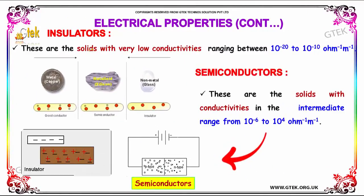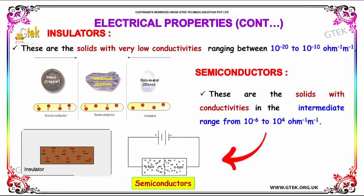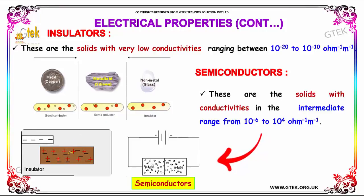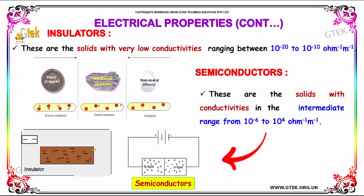Insulators are solids with very low conductivities, ranging between 10⁻²⁰ to 10⁻¹⁰ per ohm per meter.